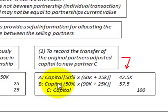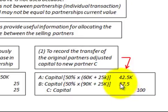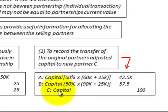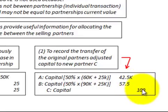For Partner B, we use the same arithmetic — they're also transferring 50% to Partner C. We take their capital amount of $90,000 plus the $25,000 increase allocated to them: ($90,000 + $25,000) × 50% = $57,500, which reduces Partner B's capital account. That amount is transferred to Partner C. Partner C's capital account is increased by $100,000 — the amount they paid to buy into the partnership by purchasing 50% of the capital interest directly from Partners A and B.